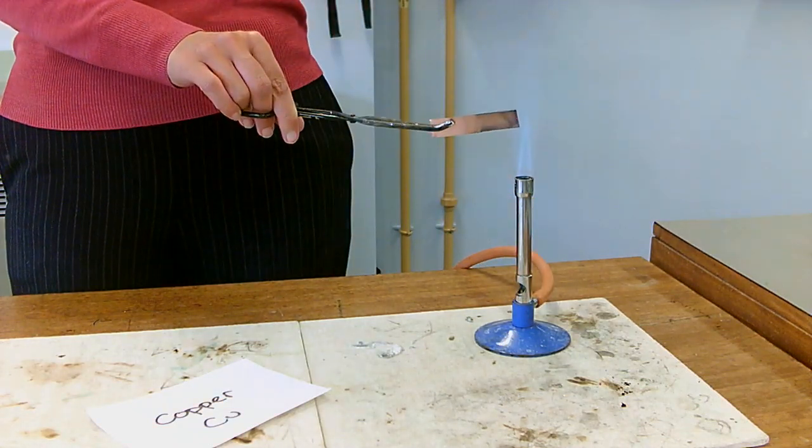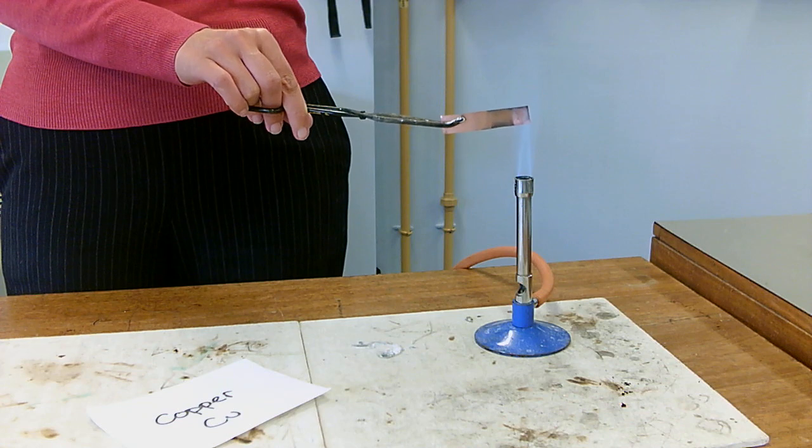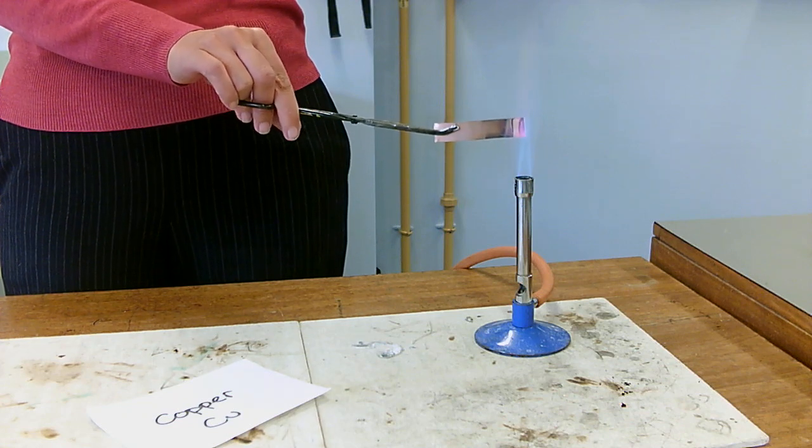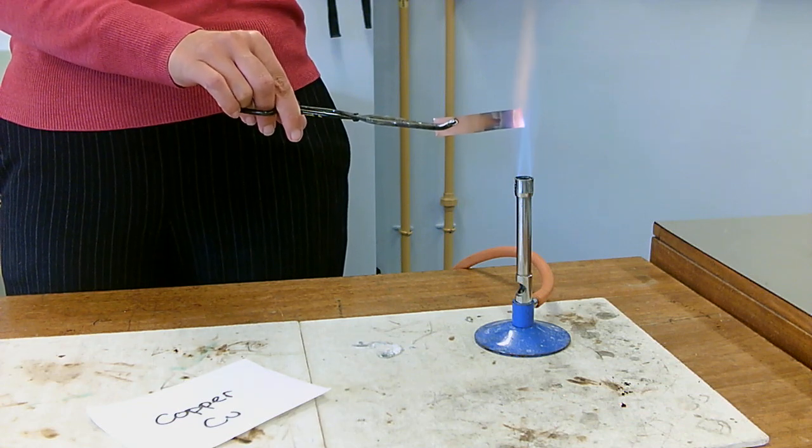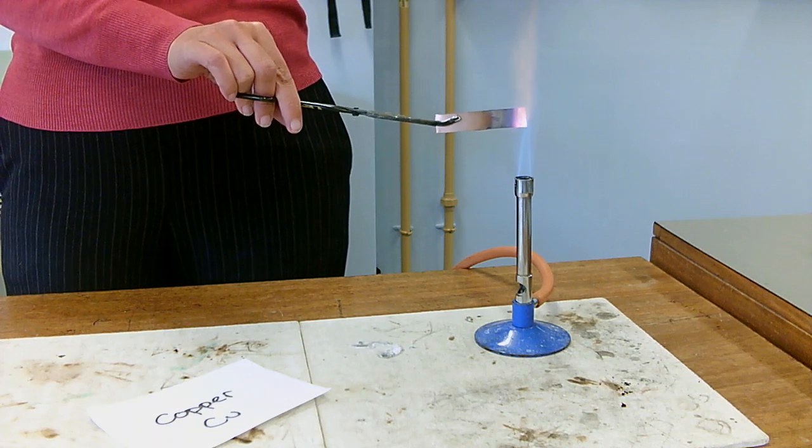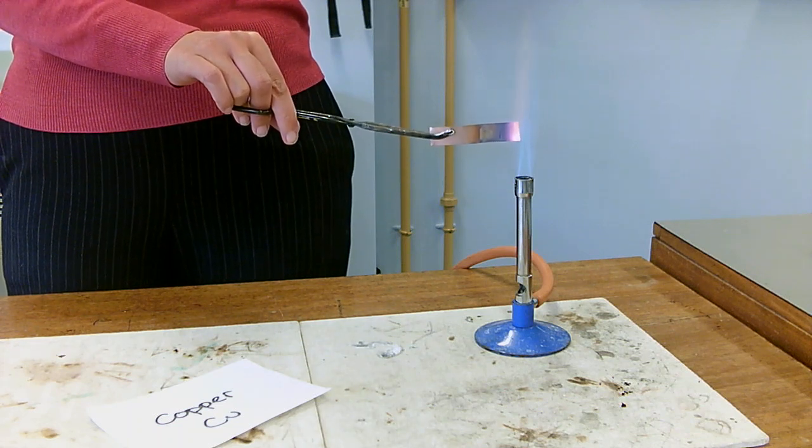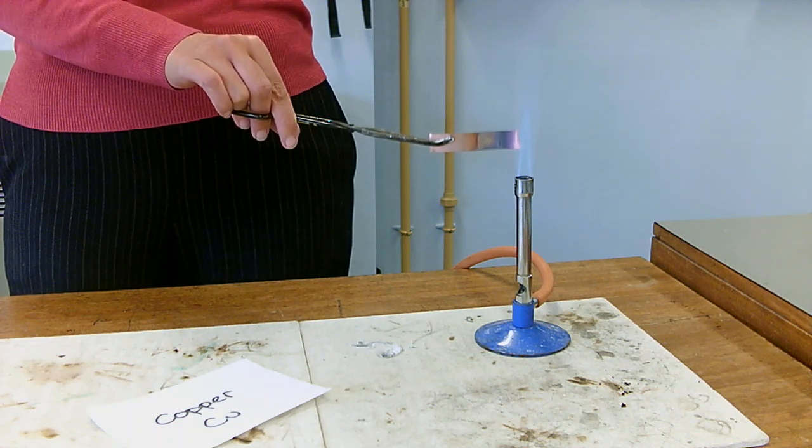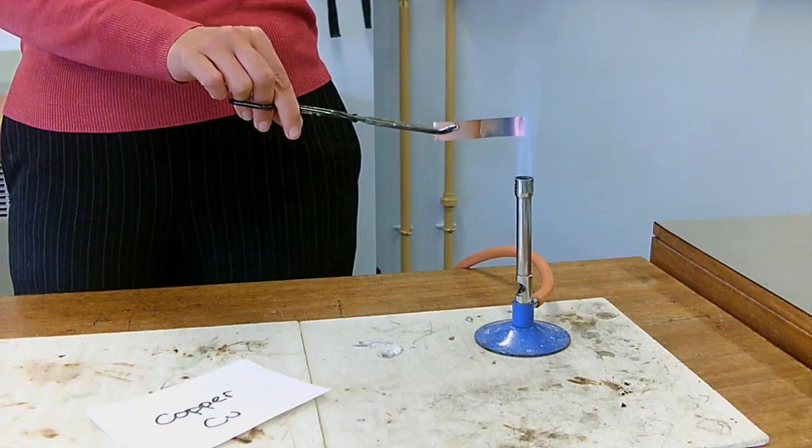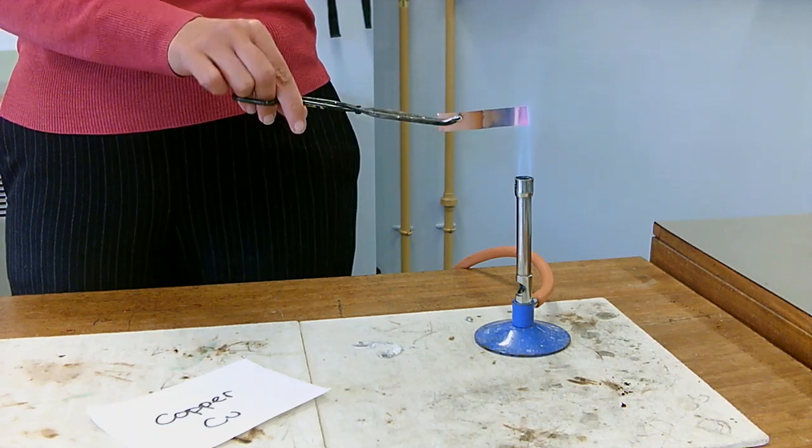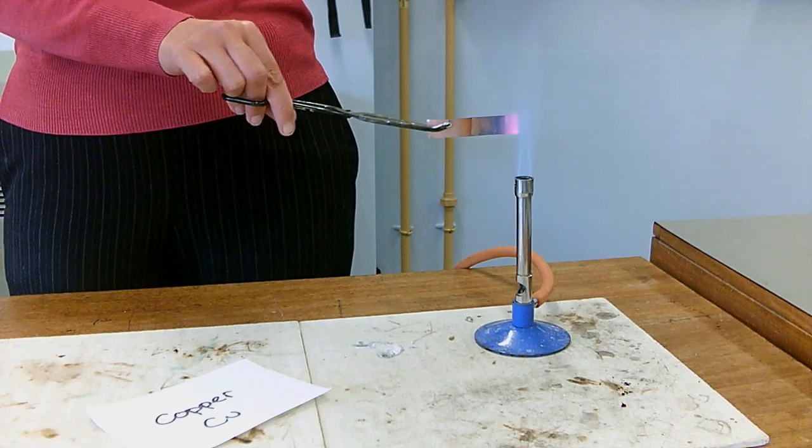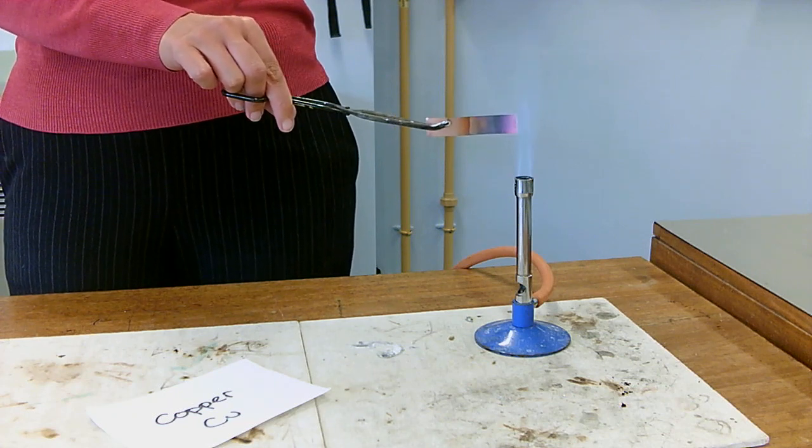Put blue flame on, put my copper in the hottest part of the flame and see what happens. The end of it is glowing orangey red because it's got so hot, but my sheets of copper are still the same size. It doesn't look like much is happening.